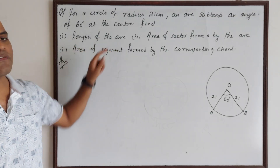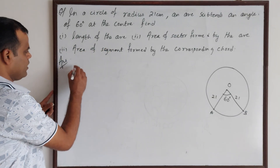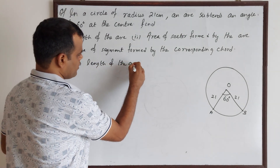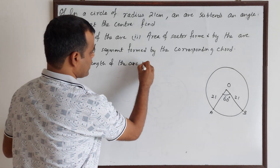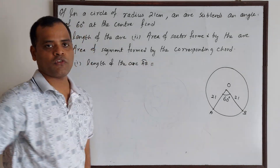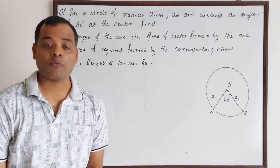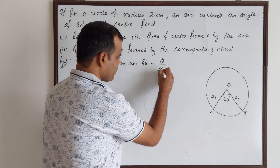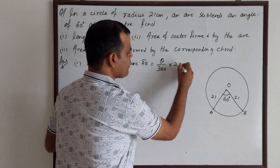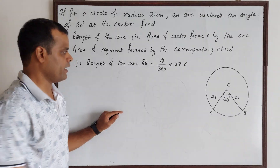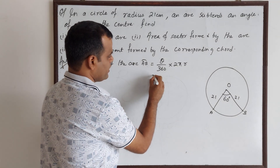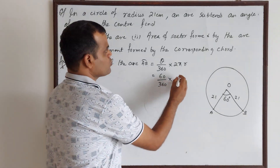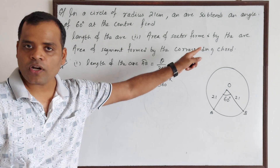Now we have to find the length of the arc. Part 1: length of arc AB. We know that the formula to find the length of an arc of a circle is theta divided by 360 degrees, into the circumference of the circle, which is 2πR. What is theta? Theta is 60 degrees. So it becomes 60 by 360 degrees into 2πR. The value of pi is not given.